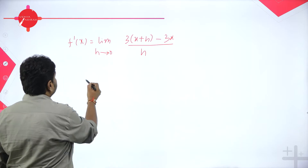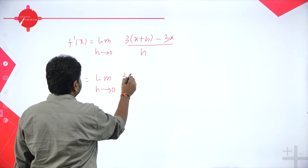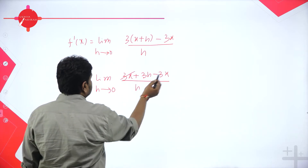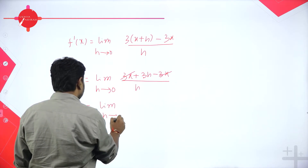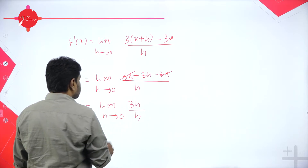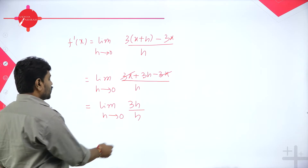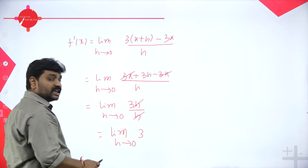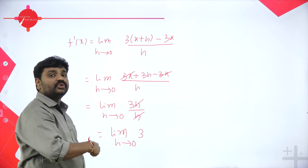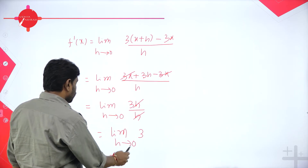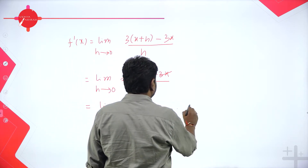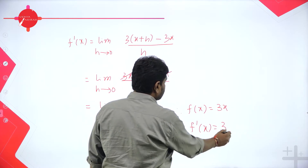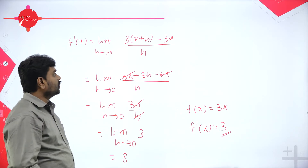Simplifying: limit as h tends to 0 of [3x + 3h − 3x] divided by h. The 3x terms cancel, leaving limit as h tends to 0 of 3h/h. We cancel h from numerator and denominator, giving limit as h tends to 0 of 3. The limit of a constant is the constant itself, so f'(x) = 3. Therefore, the derivative of 3x is 3.